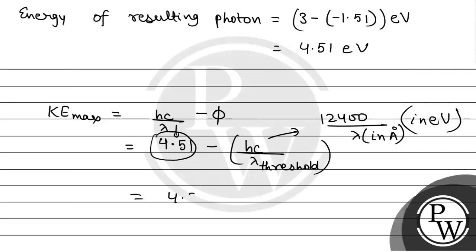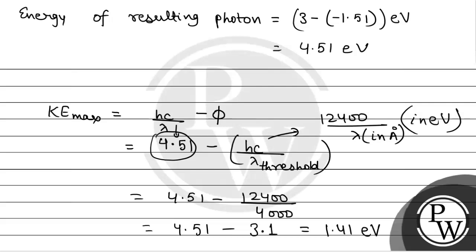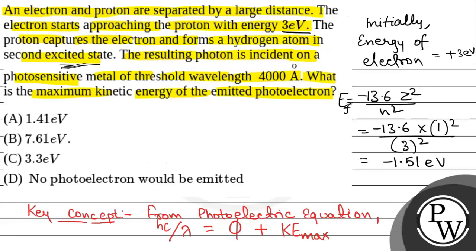So K max will be equal to 4.51 minus 12400 by 4000, which equals 4.51 minus 3.1, giving 1.41 electron volt. So the maximum kinetic energy of the emitted photoelectron is 1.41 electron volt, which is option A.